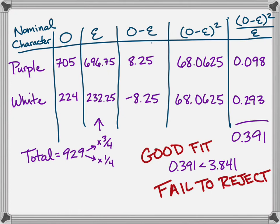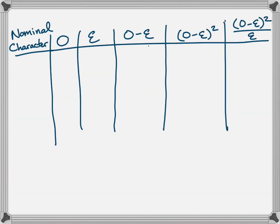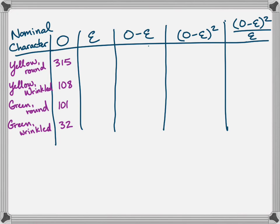All right, one more time. Finally, let's try a dihybrid cross, right? So let's look at four nominal variables at once. So here are our yellow, green, and round, wrinkled dihybrid cross results that Gregor Mendel found. I want you to go ahead and pause again. Try to work it out to a chi-square value and a decision about the null hypothesis and the fit.